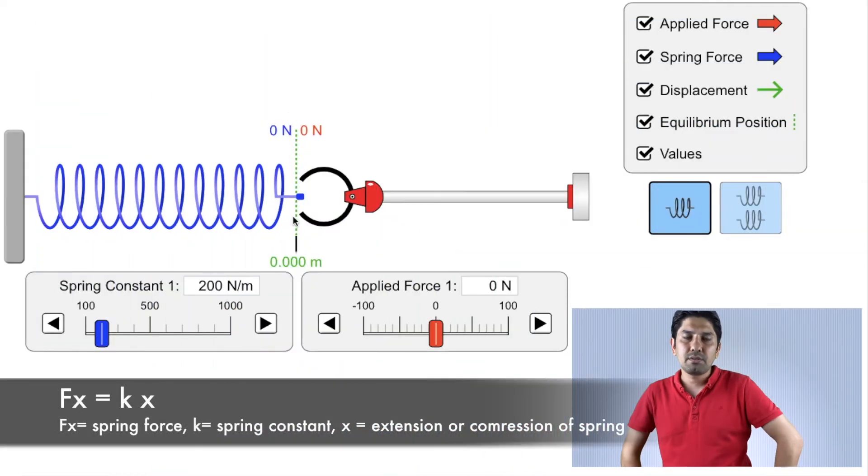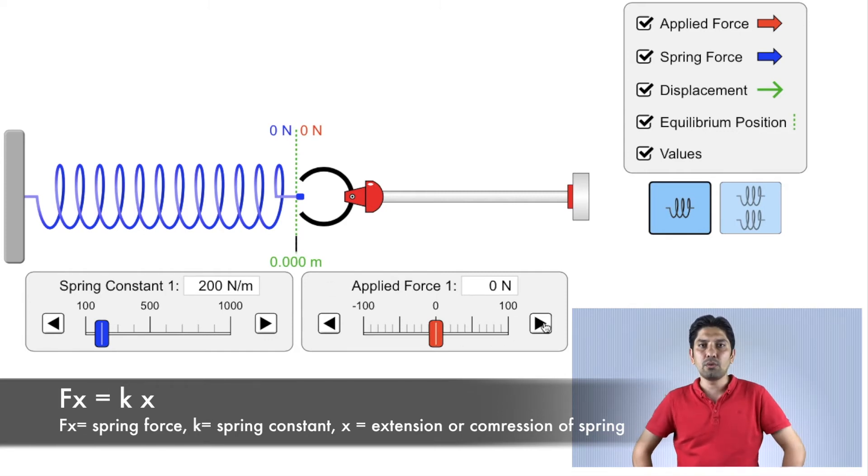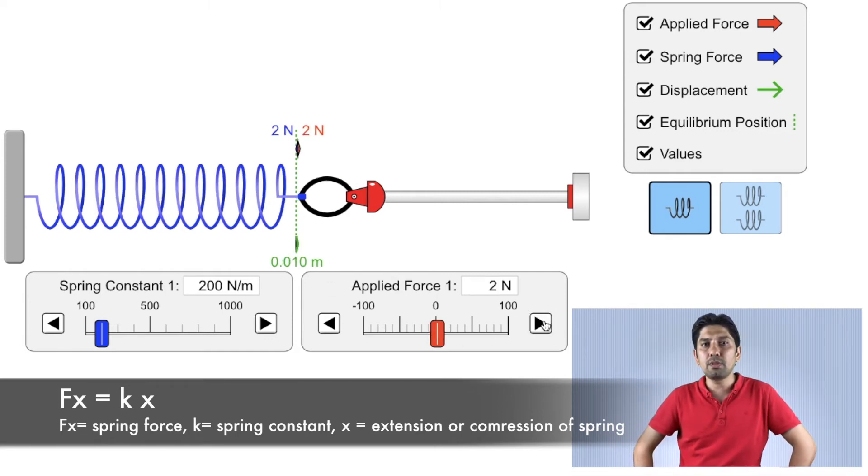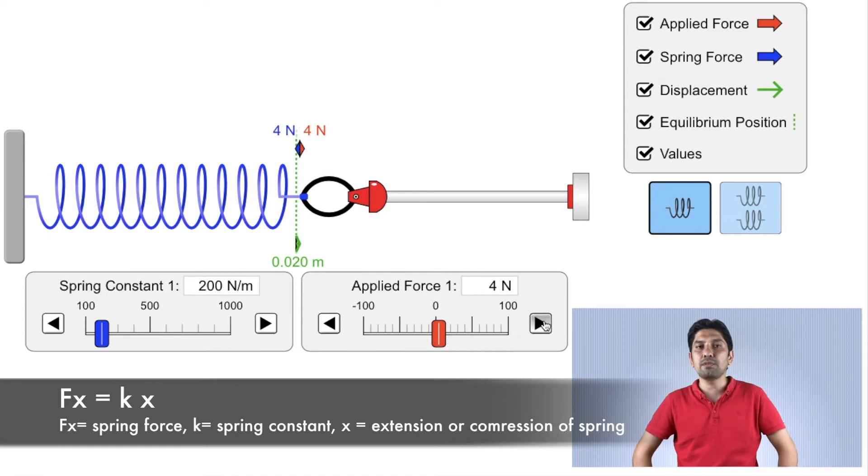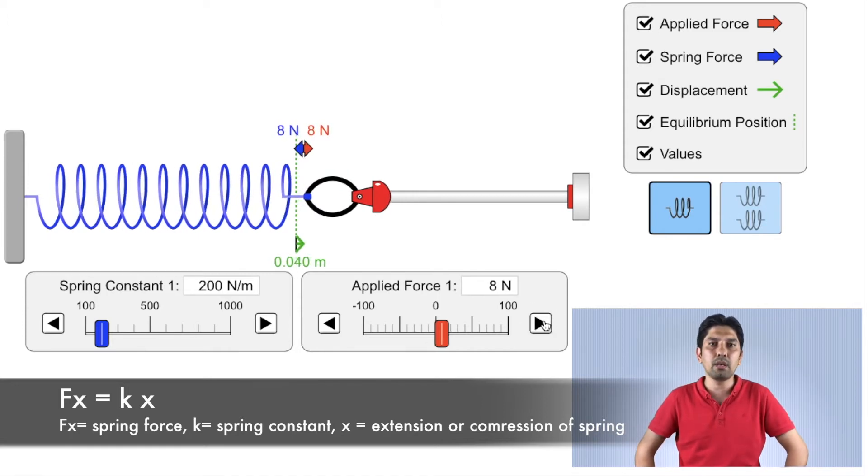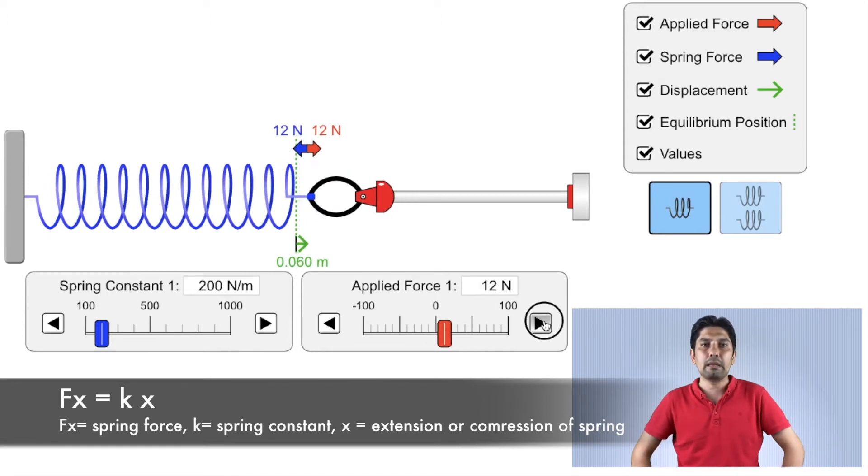An example of elastic change: spring elastic change obeys Hooke's law. What is Hooke's law? Robert Hooke says that extension of a spring is proportional to the force applied within the elastic limit.